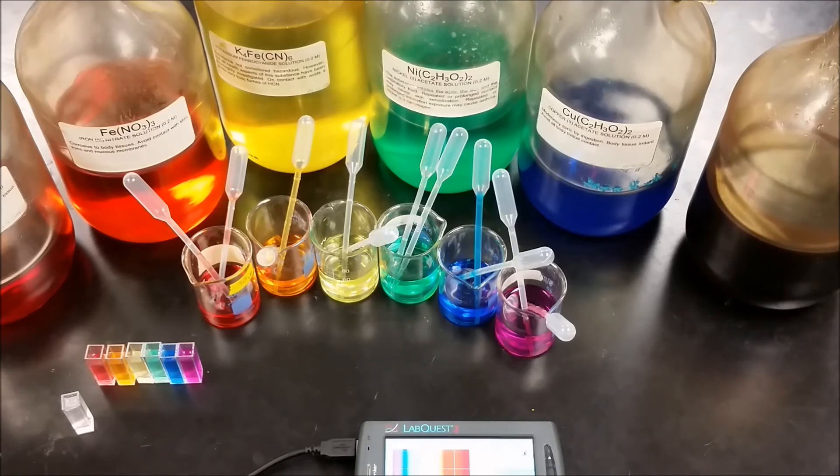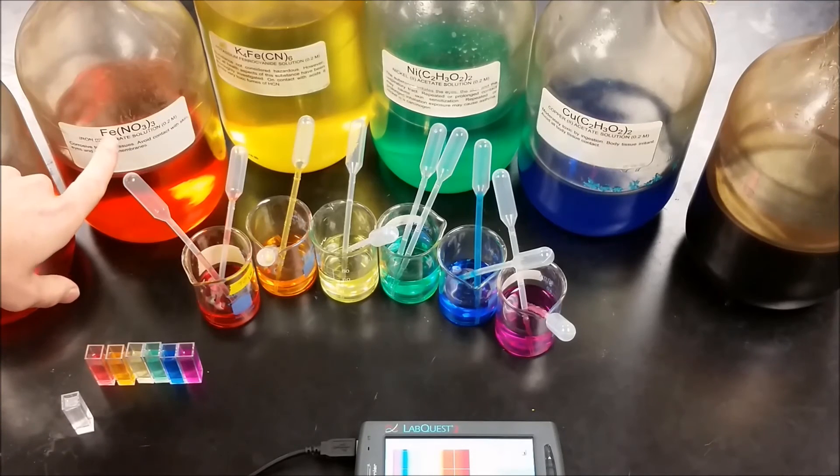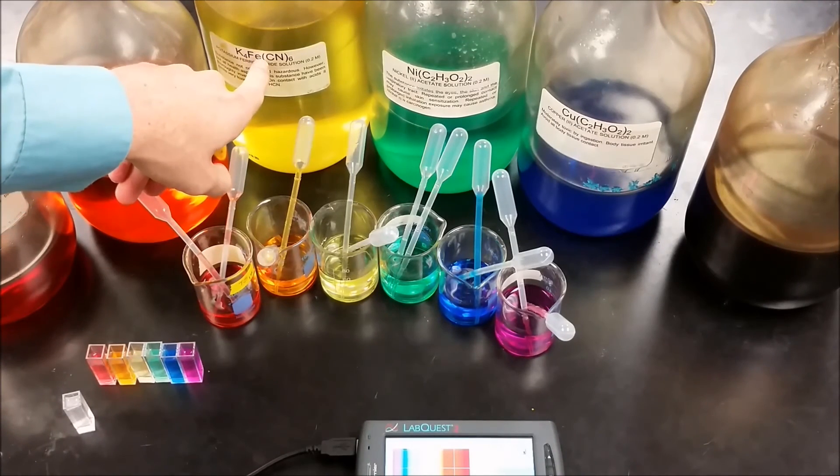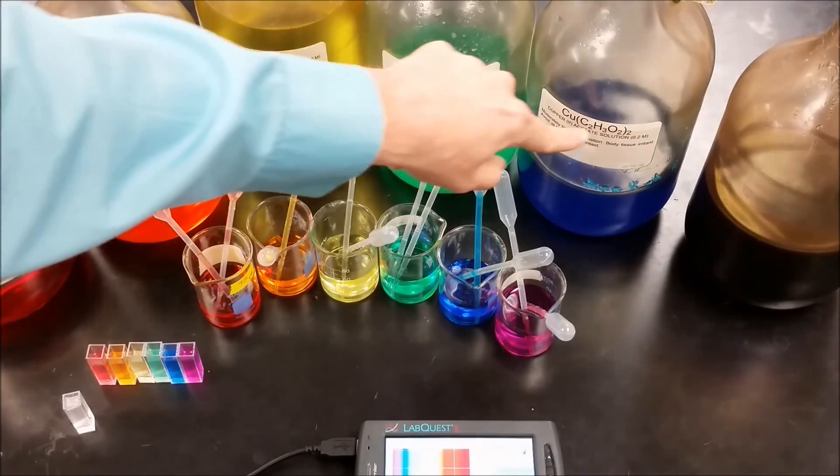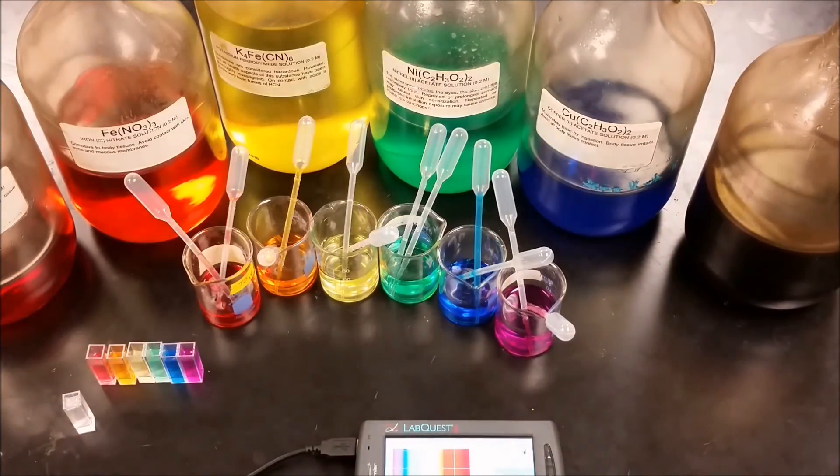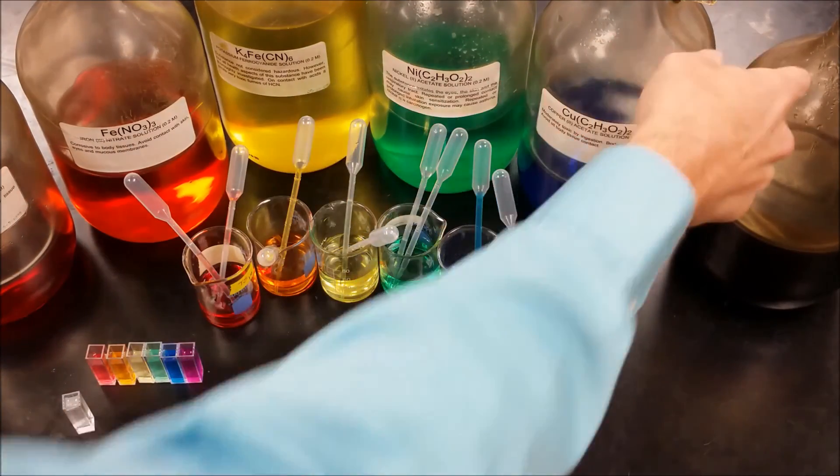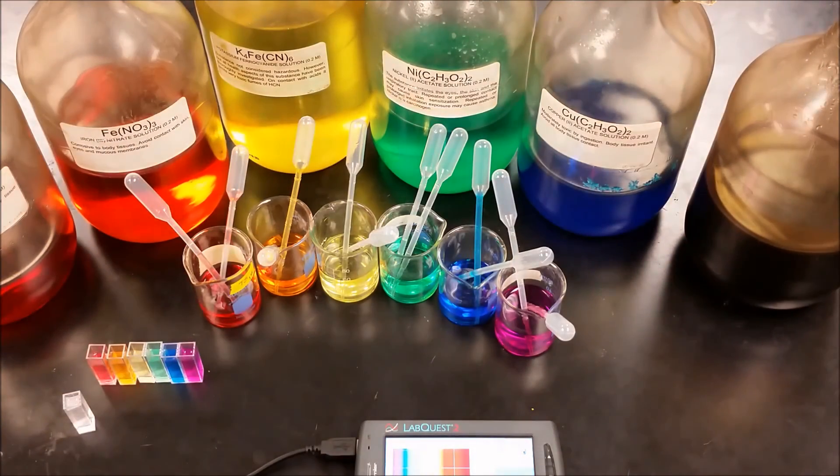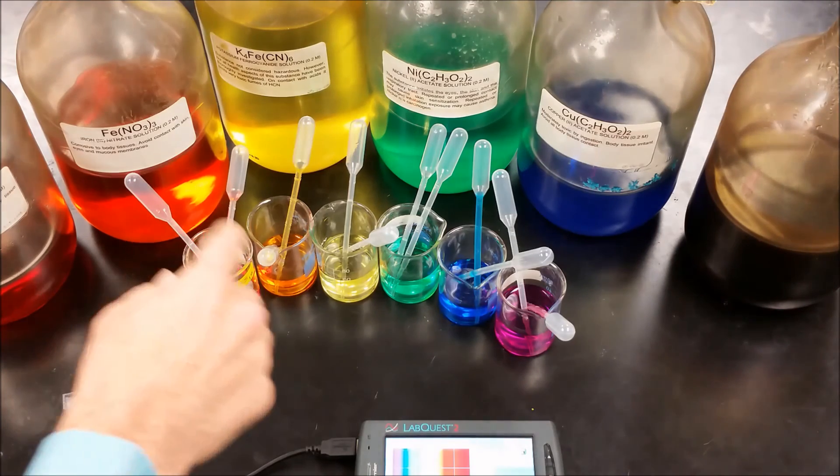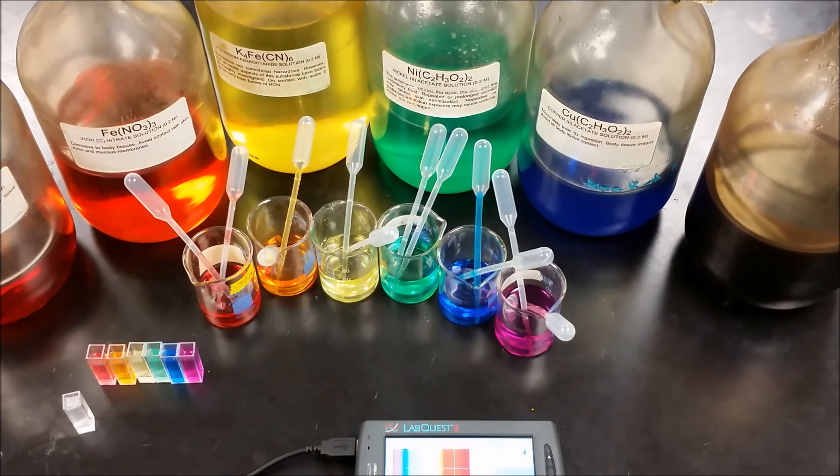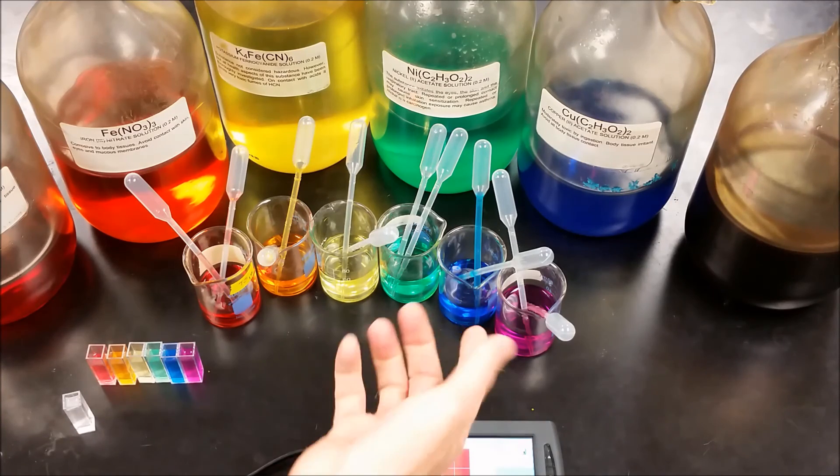These solutions are cobalt nitrate, iron 3 nitrate, potassium ferrocyanide, nickel acetate, copper 2 acetate, and potassium permanganate. So we're looking at cobalt, iron, iron, nickel, copper, and manganese. What do all of those have in common that allows them to have these particular colors? And additionally, what's going on electronically that's causing these particular colors of light to be seen by us? What's going on in this machine in terms of what's being seen and what's being absorbed?